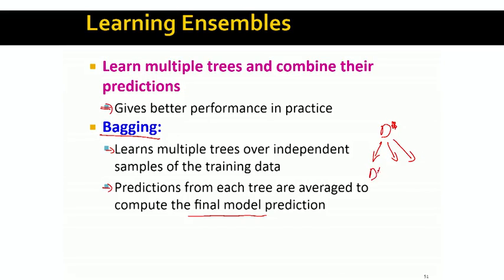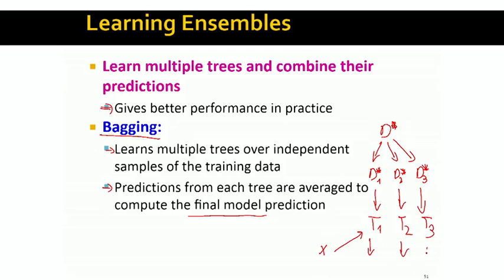We create random samples, let's call them d-star-1, d-star-2, by sampling from d with replacement. This gives us a new set of training datasets, and for each of these we train a separate tree — tree 1, tree 2, tree 3. When a new example x comes in, we make each of the trees give a prediction, and then we take the majority vote or the average to come up with the final prediction. That is the whole idea of bagging.